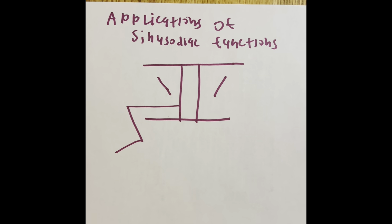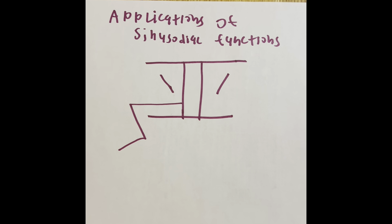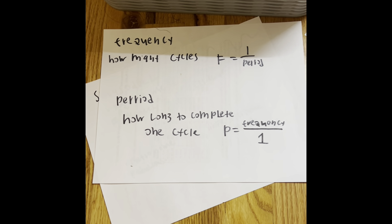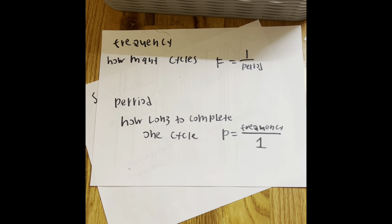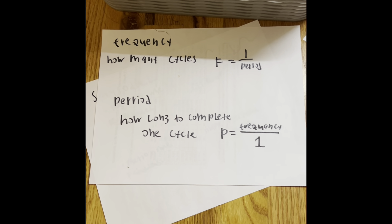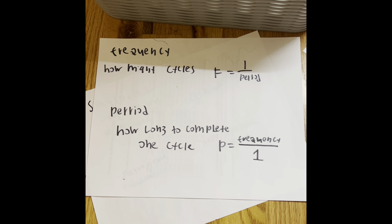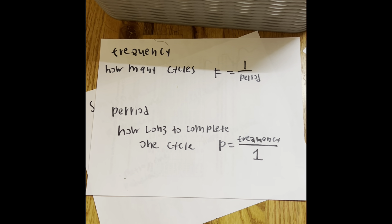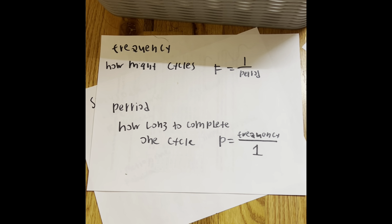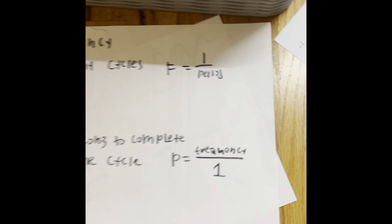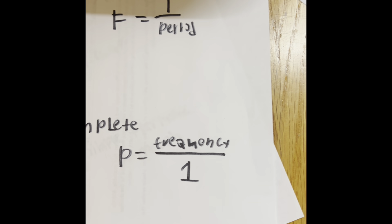We don't need to go back to understanding the frequency and the period, but to reference it, it's right here. The frequency is how many cycles something happens in a given amount of time, and the period is how long it takes to complete exactly one cycle. And these are the formulas right here.